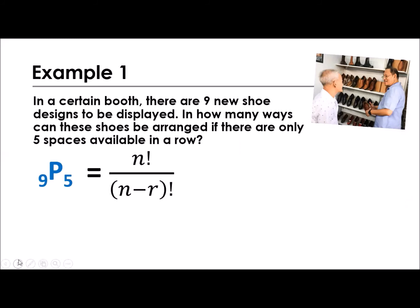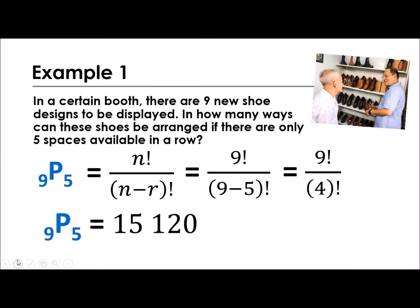And then we're going to apply that in the formula of permutation. We will have permutation of 9 taken by 5 is equal to n factorial over the quantity n minus r factorial. Then substituting the values, we will have 9 factorial divided by 9 minus 5 factorial. Then simplifying the denominator, we will have 9 minus 5 is equal to 4, so it becomes 9 factorial over 4 factorial. Then expanding those, we will get 15,120. And what does it mean? There are 15,120 ways for us to arrange those 9 shoe designs having 5 available spaces in a row. So imagine, unknowingly, we're going to use permutation in our home. So there are a lot of ways.